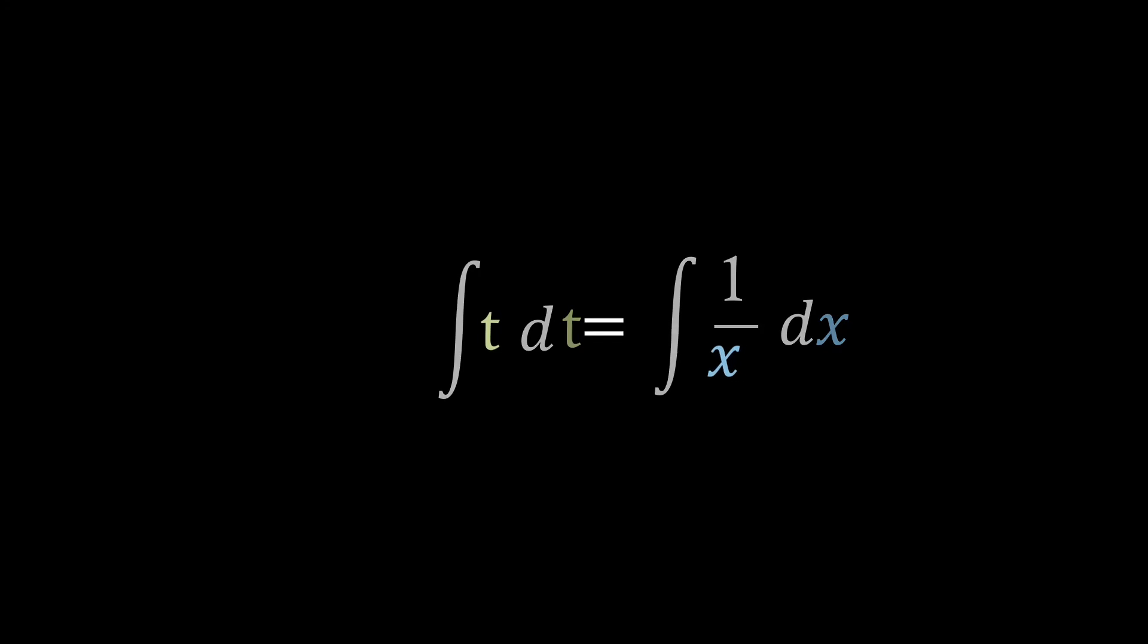So just integrating this expression and then multiplying both sides by 2 we can see that we're left with t squared equals ln x squared plus c.